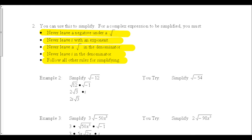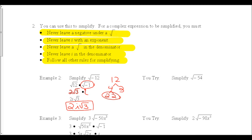Let's put these into practice with Example 2: simplify the square root of negative 12. The first thing we need to do is take this and break it apart, because the square root of negative 1 is i — so we take that out from underneath the radical. Then we simplify 12: 12 is 4 times 3, and 4 is 2 times 2, so a 2 comes out in front, leaving the square root of 3 underneath. The answer is written as 2i square root of 3 — the important thing is that i is not underneath the square root.